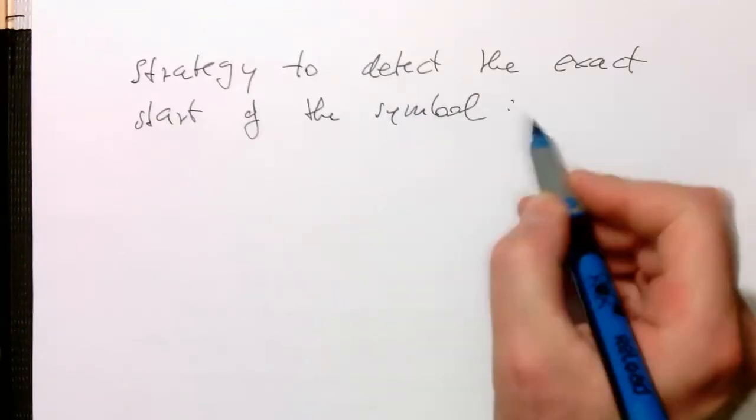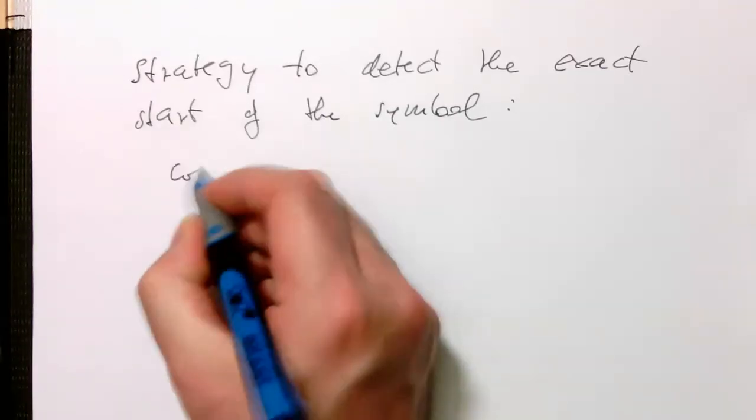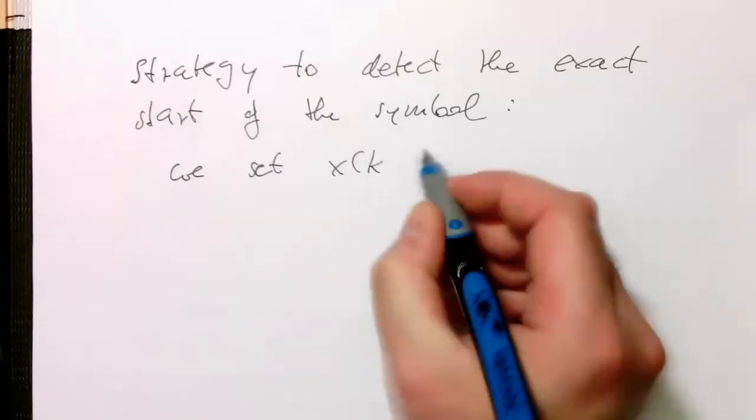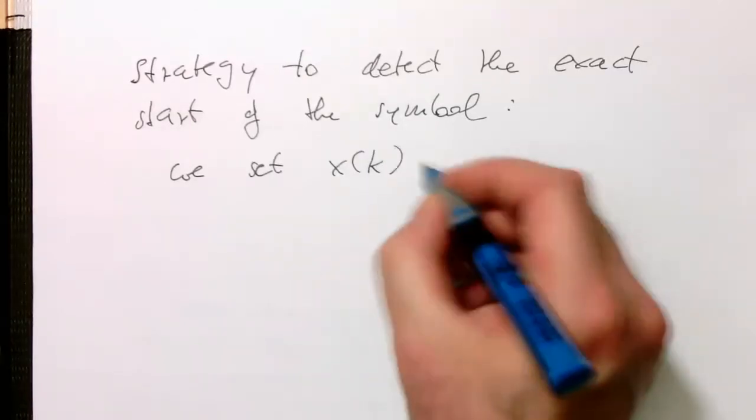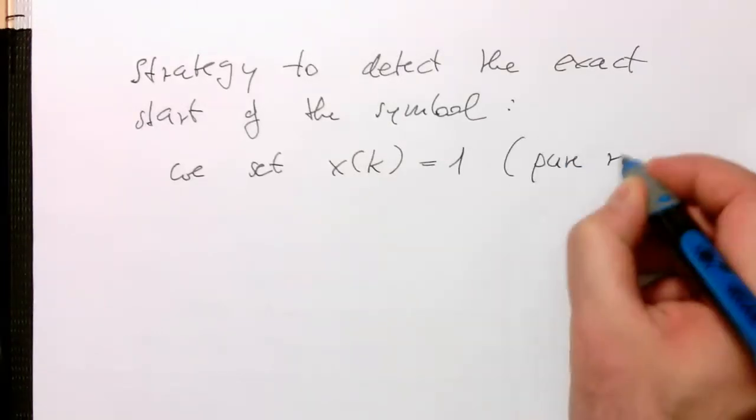Then we do the following: we set x(k) = 1, which means it's pure real valued.